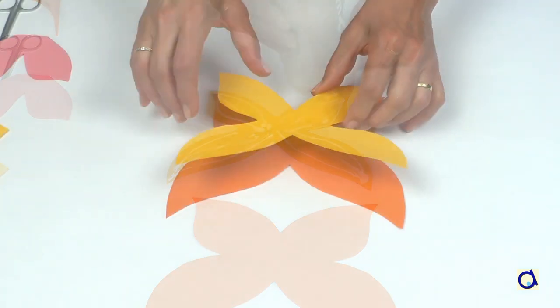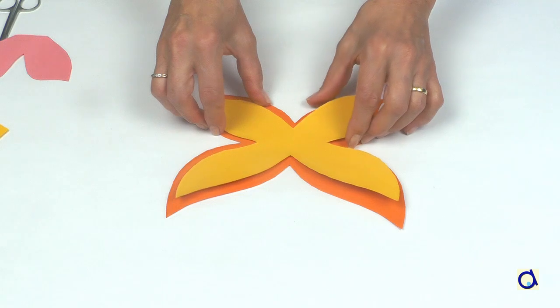Put white glue on the small pair of wings and glue them centered on the big pair of wings.